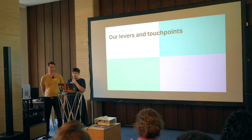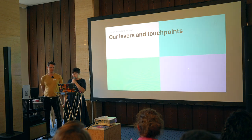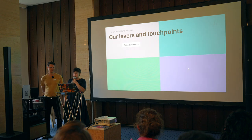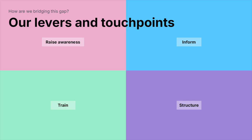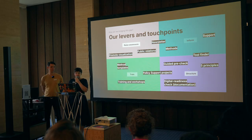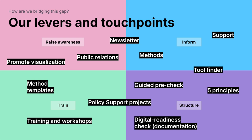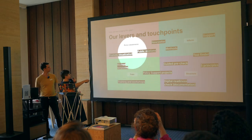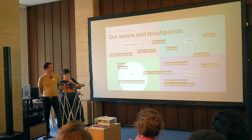Our levers and touch points: we work on four different levels to overcome these hurdles. First, we raise awareness. We inform about process and content. We train policy makers. And we structure content and ways of working. These are some of our touch points and activities we use for these four levers — for example, promoting the use of visualization or trainings and workshops.